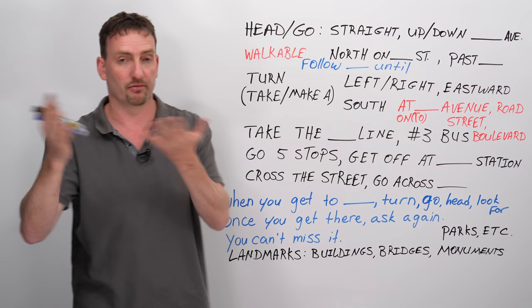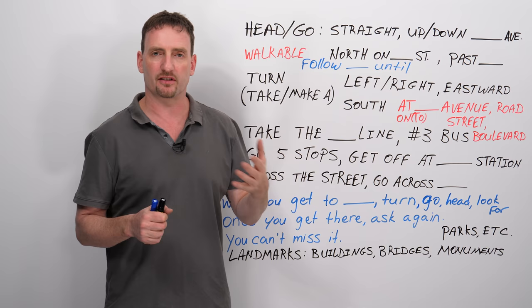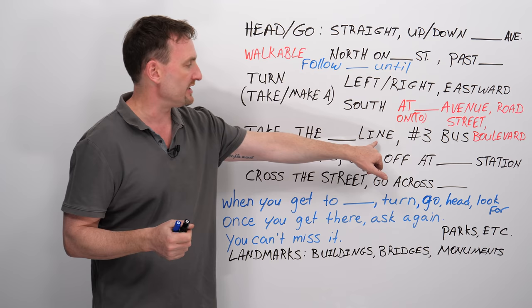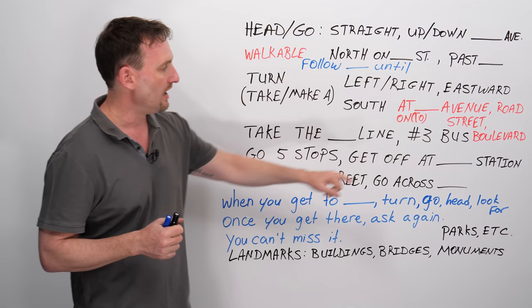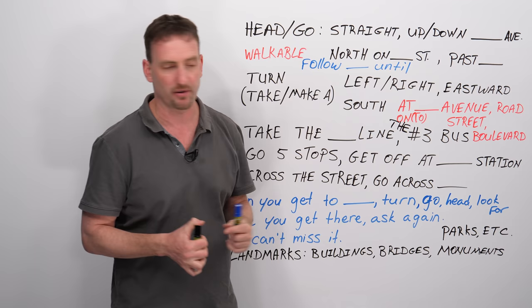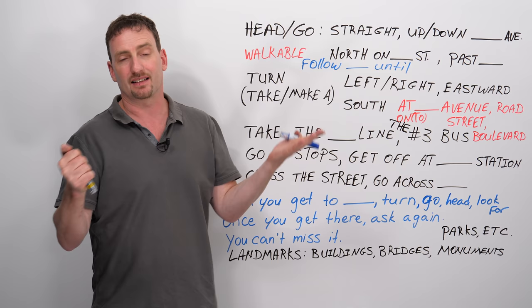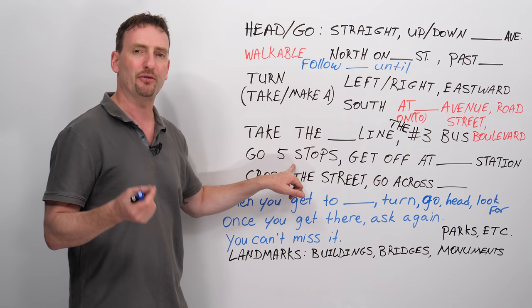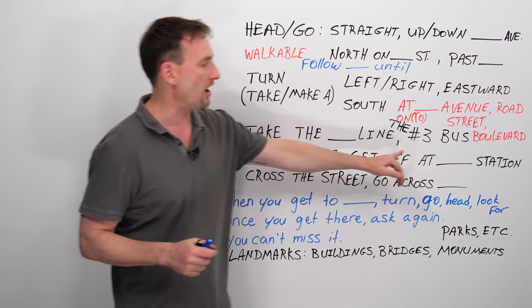Now, if the place you're going to is not walkable, is not within walking distance, then you have to give some more instructions. So, take the number one line, or number ten line. If there's a name for the subway line, generally speaking, when we talk about line, we're talking about subway or train, if it's above ground. Take the number three bus. Buses have numbers, so we don't really use lines, we just say the number of the bus. Now, you have to be very careful about giving directions with bus or subway, because in some countries you might not be able to read the signs. So, it's helpful if somebody tells you how many stops to go. So go five stops, get off at the name of the station if you know it.